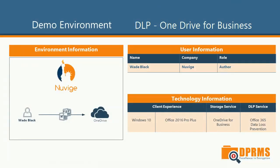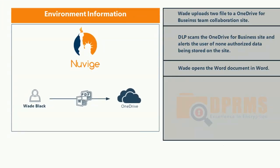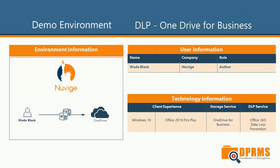In our second scenario, we will show you how DLP works with Microsoft OneDrive for Business. Wade Black will upload two documents to a shared OneDrive. These documents contain sensitive information and the organization does not allow sensitive information to be stored in this location. The technologies used are Windows 10, Office 2016 Pro Plus, OneDrive for Business, and Office 365 Data Loss Prevention.